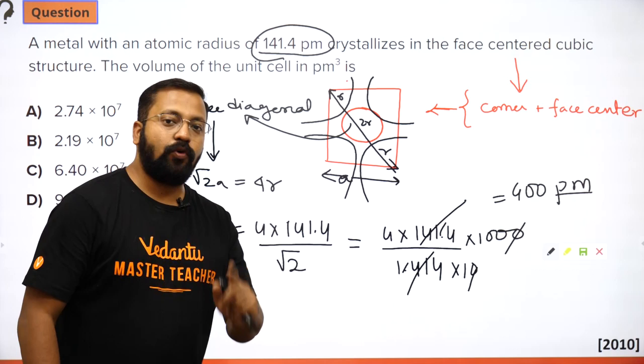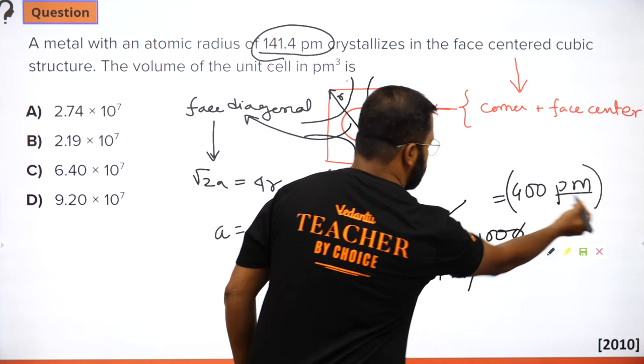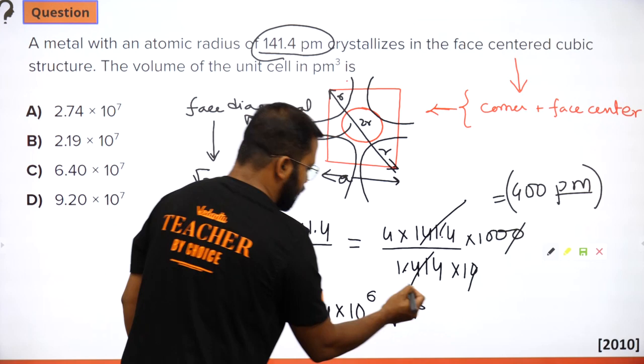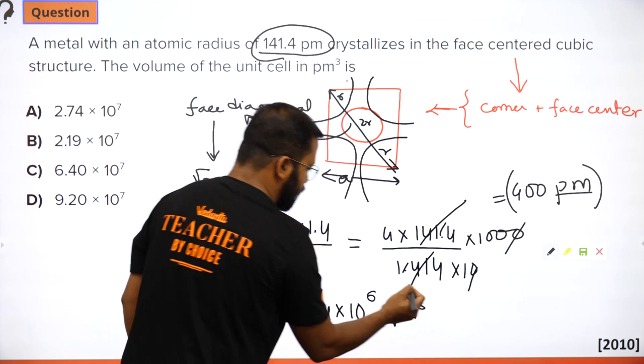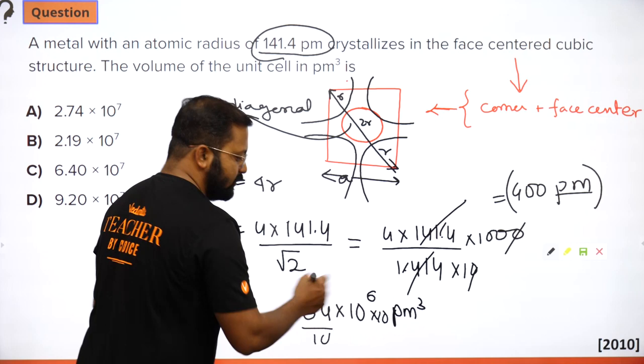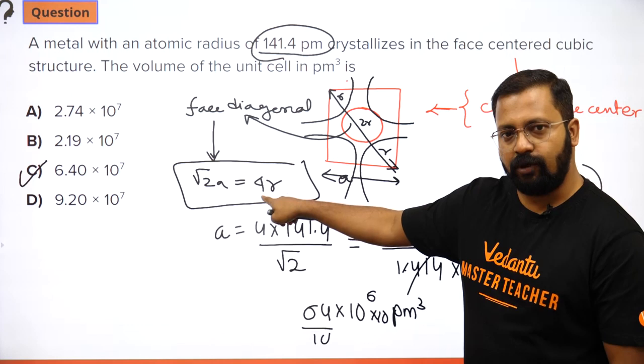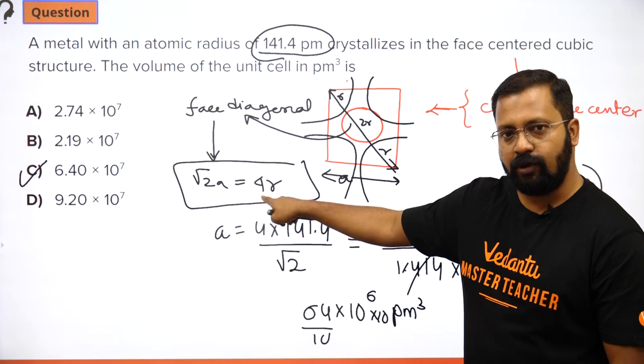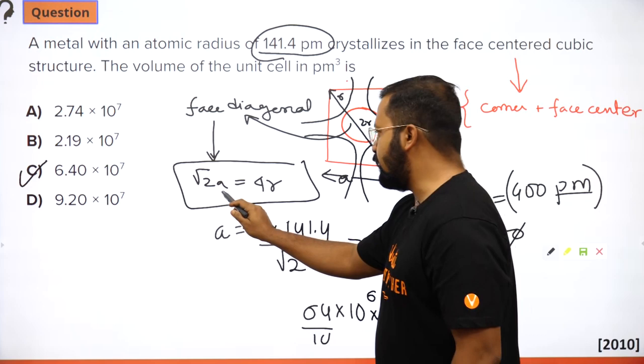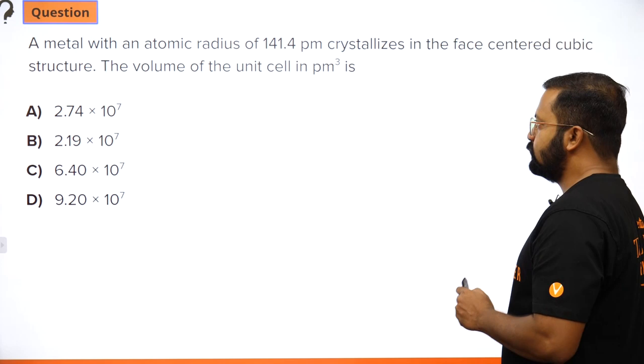So for an FCC unit cell, the formula to use is √2·a = 4r, where a is the lattice parameter (unit cell edge length) and r is the radius of each atom. Using this, we calculated the edge length as 400 pm and volume as 6.4×10⁷ pm³.